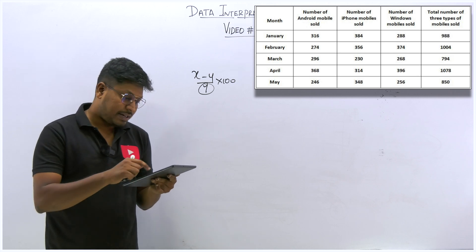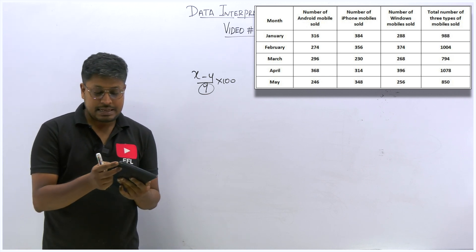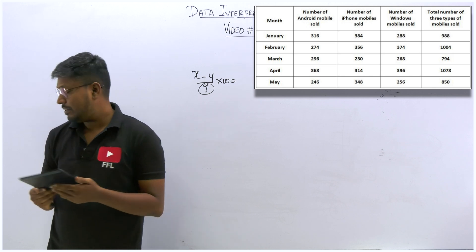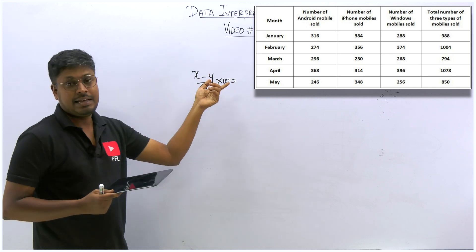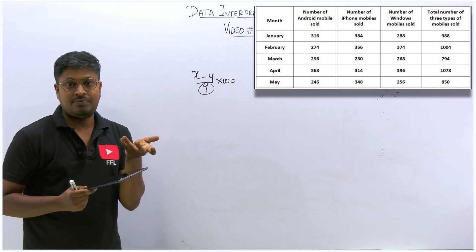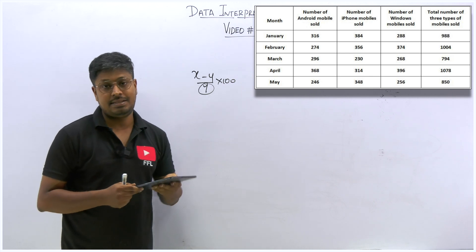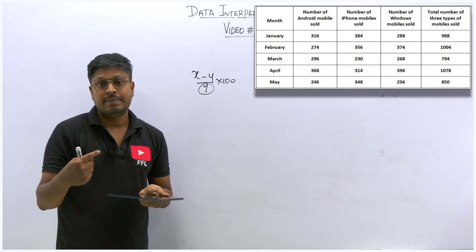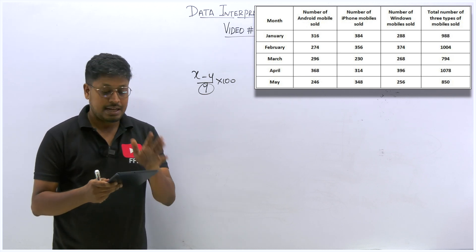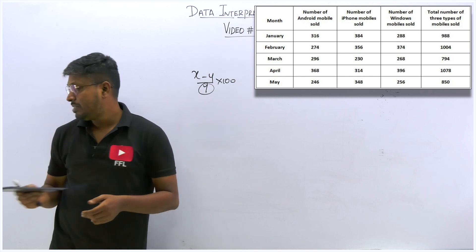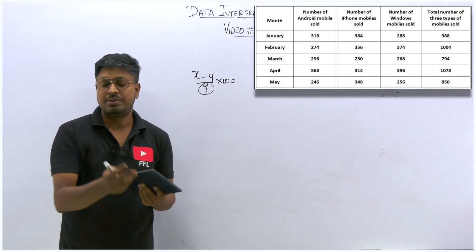The fifth question: find the ratio between the sum of total mobile phones sold from January to March and the sum of total mobile phones sold from April to May. Just add the values for each period and find the ratio. All five questions are not that difficult to solve. Initially it takes more time to find the values, but remember: for the first month write the full equation x+y, and from the second month onwards, directly calculate x+y+z using mental math.